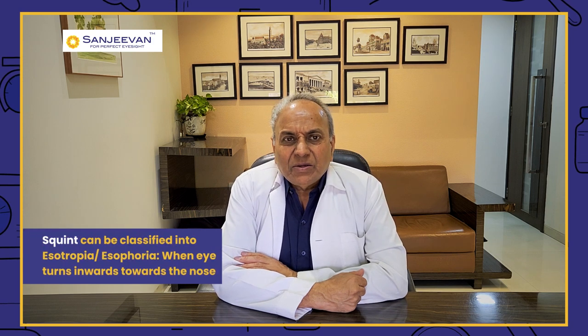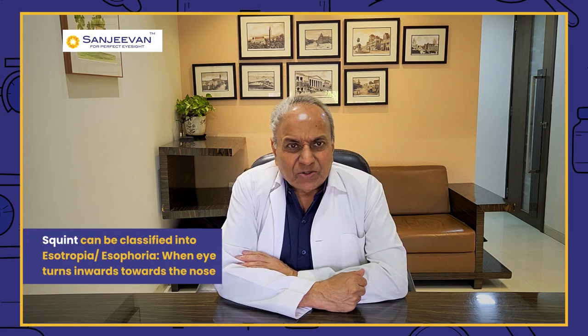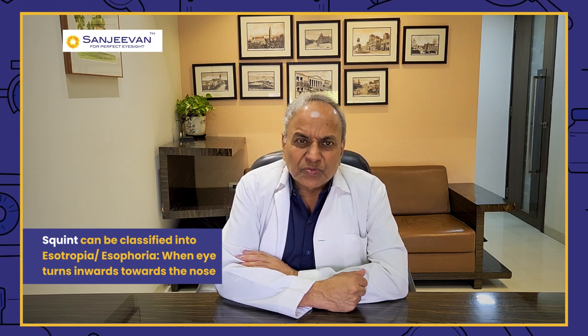Either one eye or both eyes go towards the nose, or outside towards the ears, or upward towards the forehead, or downward towards the chin. When the eye goes inside towards the nose it is called esophoria or esotropia; when it goes outside towards the ear it is called exophoria or exotropia; when it goes upward it is called hyperphoria, and downward also referred to as hyperphoria.